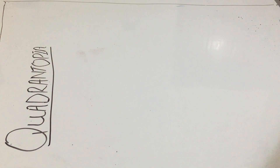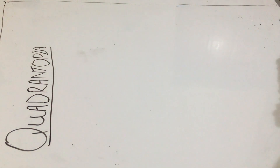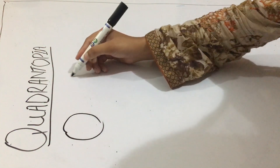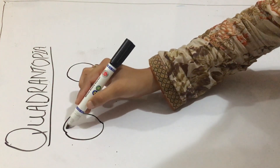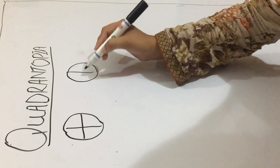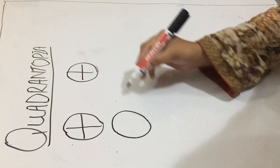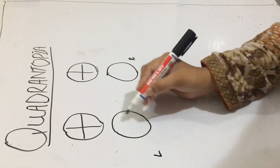In this lecture we will mainly discuss about quadrant nopia. Although it is difficult, after this lecture you will find it very easy. Now we proceed further for quadrant nopia. I have to divide the visual fields into the quadrants. These are the two visual fields — four quadrants for the right and left. Here I draw: this is the right eye and this is the left eye.